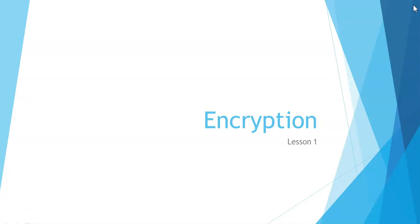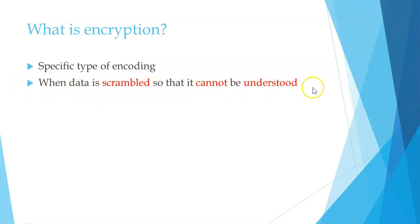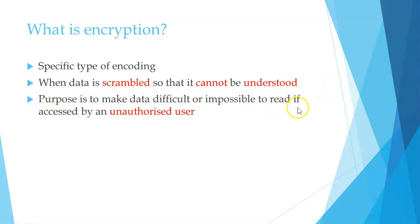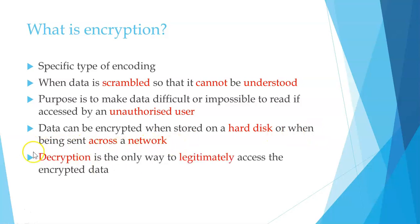We're going to be talking about encryption. Encryption is a scrambling of information so that it becomes unreadable to a third party which doesn't have access to the decryption key. This topic was discussed in IGCSE and it is here again in AS. Encryption is a specific type of encoding where data is scrambled so it cannot be understood. The purpose is to make data difficult or impossible to read if accessed by an unauthorized user. Data can be encrypted when stored on a hard disk or when being sent across a network, and decryption is the only way to legitimately access the encrypted data.